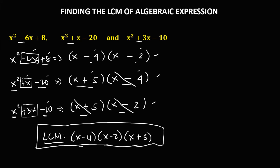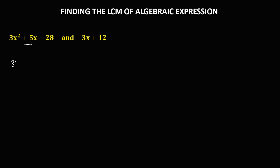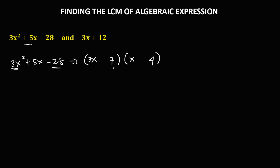For this next expression, we have 3x squared plus 5x minus 28. To find the factors: for 3x squared that's 3x times x, and for negative 28 we can have 7 times 4. To check using pyramid multiplication: 7 times x is 7x, and 3x times 4 is 12x. The middle term is positive 5x, so to achieve positive 5x, one must be negative and one positive.